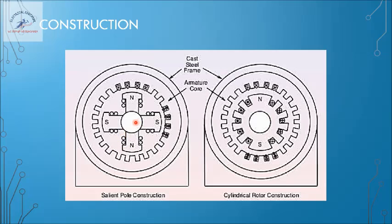In the salient pole construction, the poles of the rotor protrude radially outwards from the shaft — a physical pole-like structure is present. The number of poles can vary depending on the design; usually it is two, four, six, or eight, and larger motors may have more poles. There is a winding on the field which gives the polarity depending on the direction of winding and direction of current flow. DC supply is given to the field.